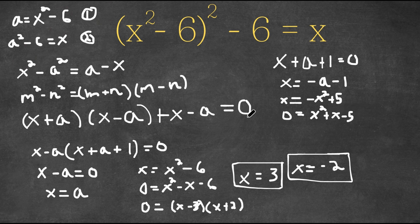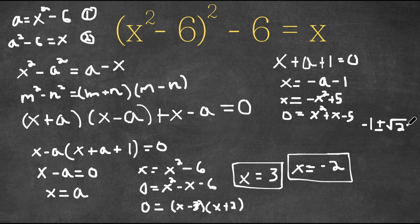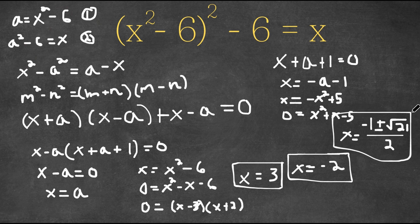Now if we subtract x on both sides, we get 0 equals x squared plus x minus 5. Plugging this into the quadratic formula, we get x equals negative 1 plus or minus the square root of 21, all over 2. So our two other solutions are negative 1 plus the square root of 21 over 2, and negative 1 minus the square root of 21 over 2.